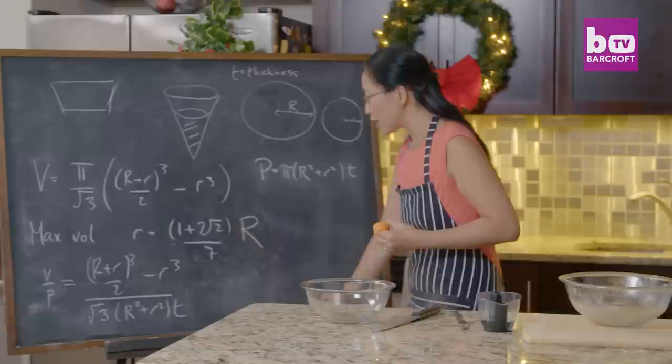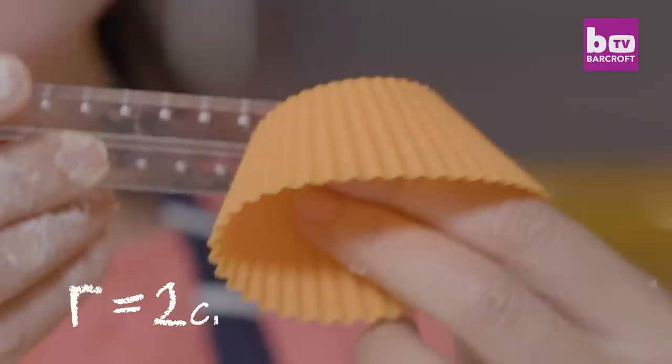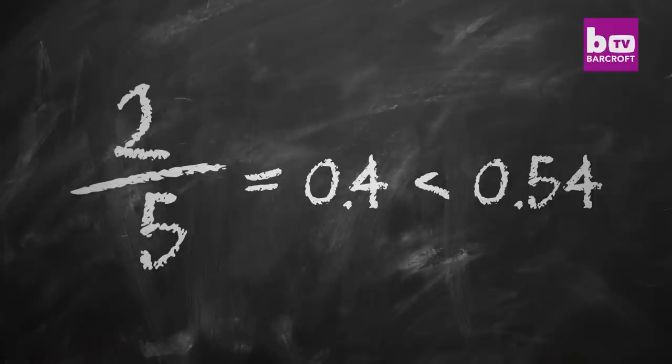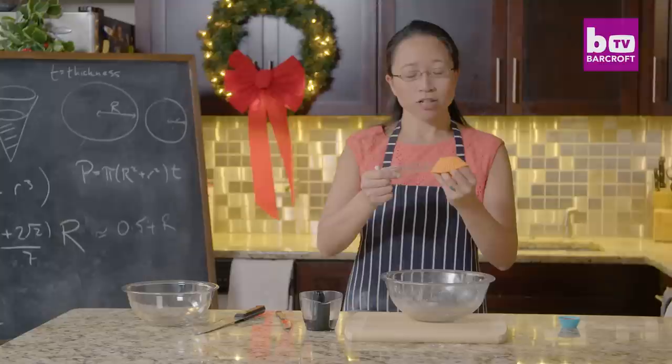Let's have a look at my pie molds and see how they do according to my formula. Because this comes to about 0.54 R. Mine is only 0.4 R, which means that for that amount of pastry I'm not going to get the most possible filling in my pie. So what I should do is I should make this big pastry a little bit smaller.